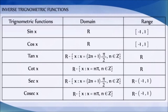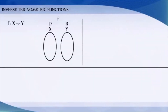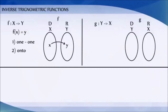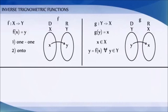We also learned in earlier classes that if f is a function from X to Y such that f(x) = y is one-to-one and onto, then we can define a unique function g from Y to X such that g(y) = x, where x belongs to X and y = f(x), for all y belonging to Y.